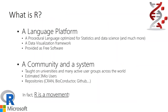Let's talk about what R is. R is a language and R is also a movement. It's a movement because it is much more than just a language — everybody is going towards R, and everything is basically coming together in this language for statistical analysis, data predictions, and any kind of data science task. It is a platform which means you can do any kind of statistical and data scientist tasks. It is a data visualization framework and it is provided as free software.